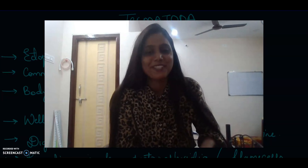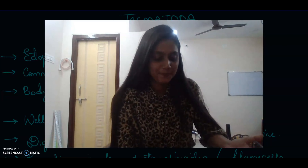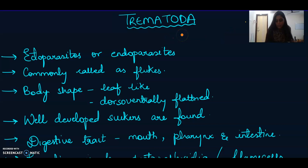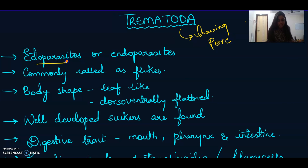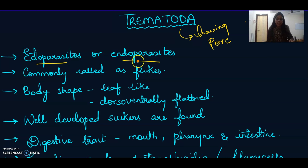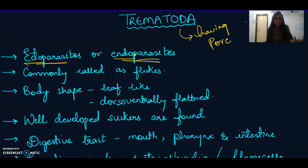Trematoda — meaning 'having pores.' These organisms are ectoparasites or endoparasites. Ectoparasites means these organisms live outside the body of the host organism, while endoparasites means these organisms live inside the body of the host organism. So ecto means outside and endo means inside.